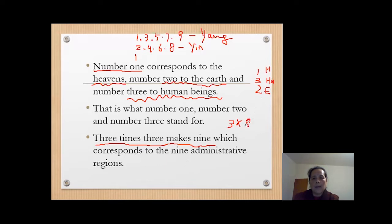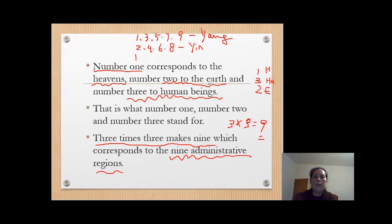We're talking about nine later as a more important number. We got nine regions here. Three times three: one is heaven, two is earth, three is human. From heaven, we separate heaven, human, earth again. From human, we separate heaven, human, earth again. And from earth, we separate heaven, human, earth again.